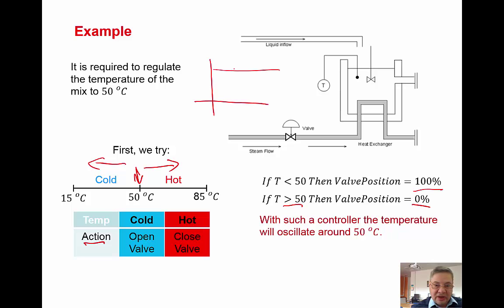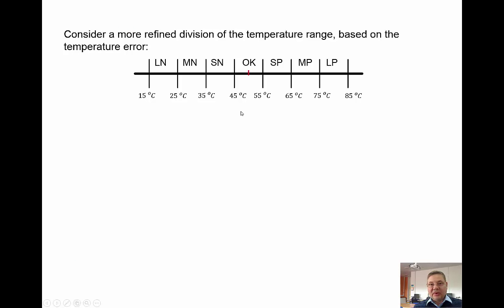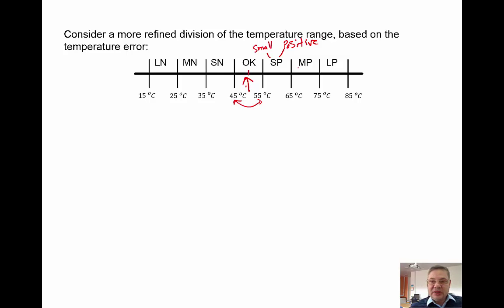With such a controller, the temperature will oscillate around 50 degrees. To get rid of the oscillation, rather than just cold and hot, I divide the range further. I define an okay region around 50 degrees — say between 45 and 50 — and then small positive, medium positive, and large positive on the high side, and similarly small negative, medium negative, and large negative if the temperature falls below the desired value.